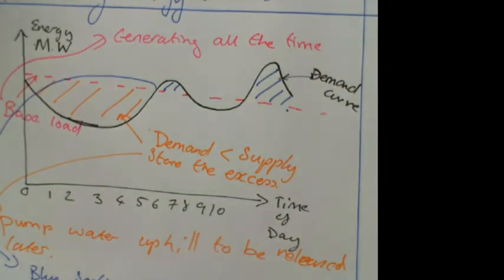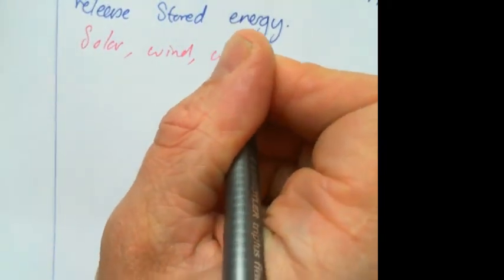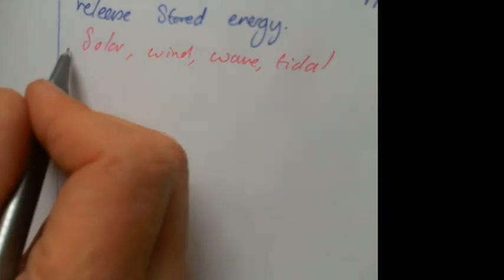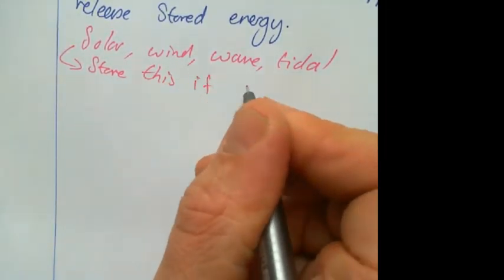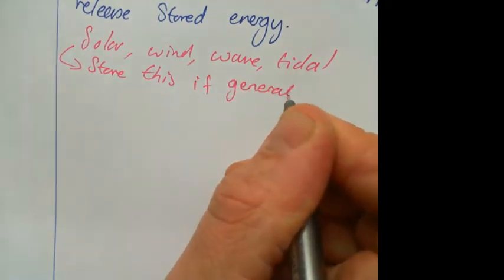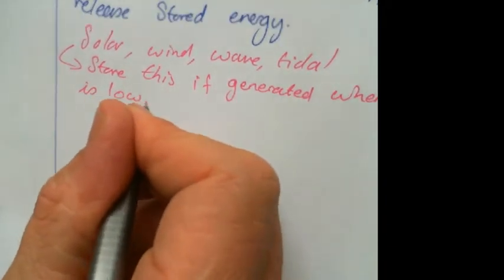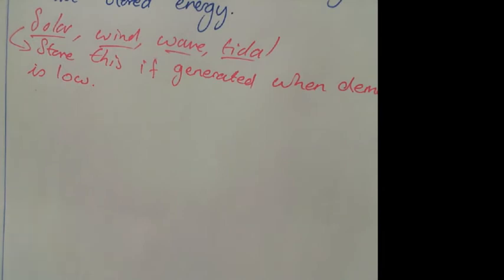And then we've got some other variability in that. So if you think about previously when we're talking about solar, wind, wind wave, tidal, whatever it might be, any of these they're not reliable, so you have to store their energy if it's made at the wrong time. So if you generate it when the demand is low, then it needs to be stored. And that's any of these types of ones, any of the renewables which are unreliable, you can store them when the demand is low.